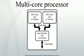Homogeneous multicore systems include only identical cores; heterogeneous multicore systems have cores that are not identical. Just as with single processor systems, cores in multicore systems may implement architectures such as superscalar, vector processing, or multithreading. Multicore processors are widely used across many application domains including general purpose, embedded, network, digital signal processing, and graphics.